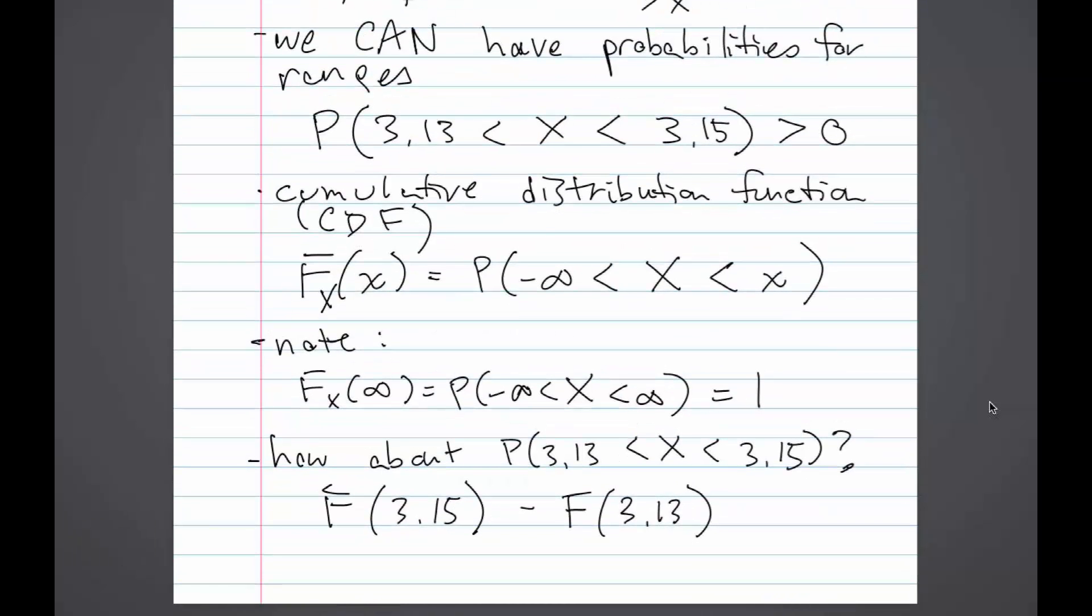Note that the probability of big X being between negative infinity and positive infinity is 1 since X has to take on a value. Therefore, the value of big F of positive infinity is equal to 1.